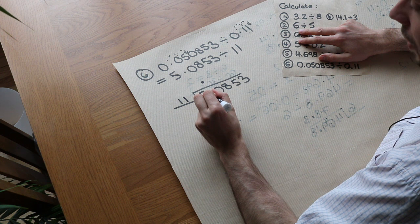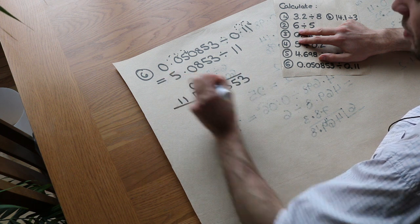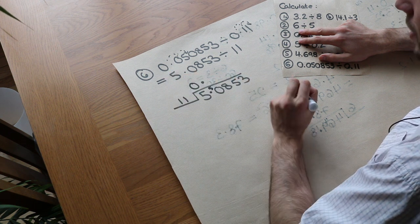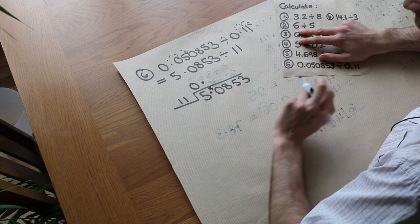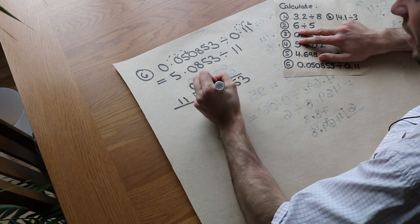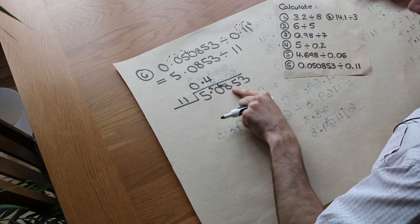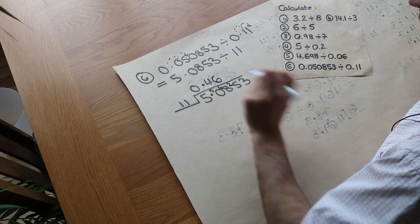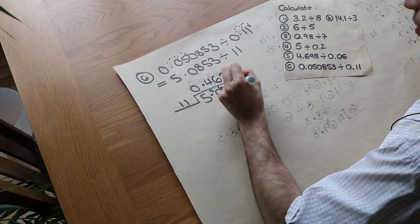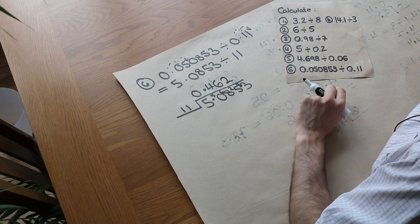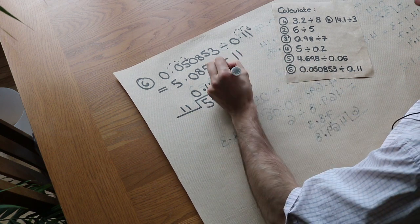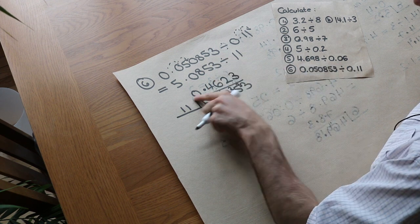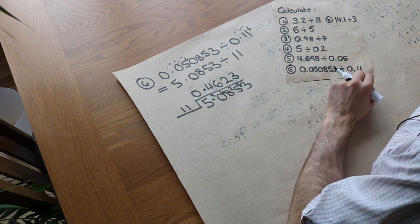So 11 is into 5. Well it goes in 0 times, but we still have the 5 remaining. 11's into 50, we can do. It goes in 4 times remainder 6. 11's into 68, it goes in 6 times remainder 2. 11 into 25, it goes twice remainder 3. And then 11 goes into 33 exactly 3 times. So we can stop. And that is the answer, 0.4623.